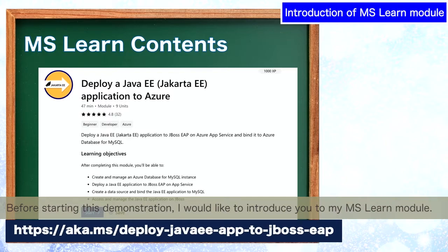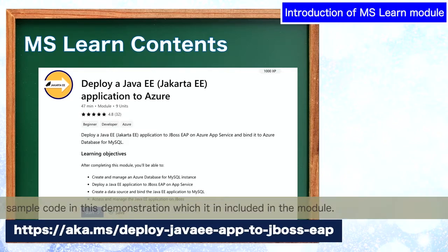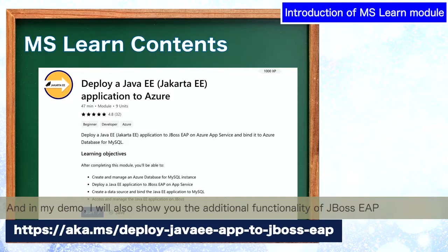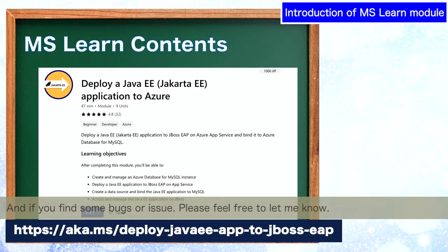Before starting the demonstration, I would like to introduce you to my MSLAM module. Originally, I created this MSLAM module by myself, and I will use the setup script and the sample code in this demonstration. In my demo, I will also show you additional functionality of JBoss EAP which is not listed in the MSLAM module. If you are interested in using JBoss EAP on Azure App Services, please access this MSLAM module and try it. And if you find some bug or issue, please feel free to let me know.